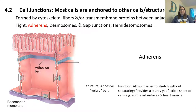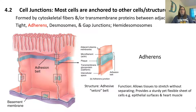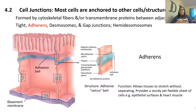Tight junctions are really important in your bladder and stomach, because we don't want the contents leaking out through those cells, so they're tightly woven together. The next group are the adherens junctions, which are more like an adhesive or Velcro-type belt that allows tissues to stretch without separating and pulling apart. This provides a sturdy yet flexible sheet of cells, seen in epithelial surfaces like your skin, and also in heart muscles that need to stretch and move together.